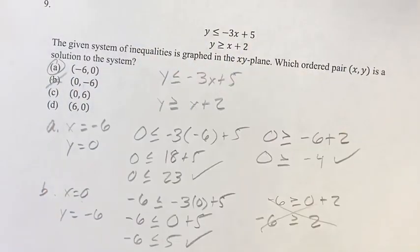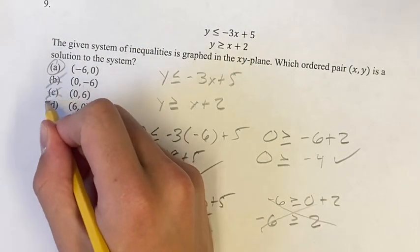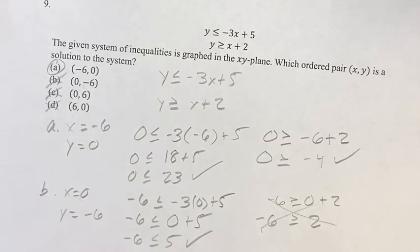Therefore, b is not the answer. And if you did this for c and d, you'd also get that either one of them or both of the inequalities does not work. So a is going to be your final solution. As always, thank you for liking and subscribing, and I'll see you in the next video.